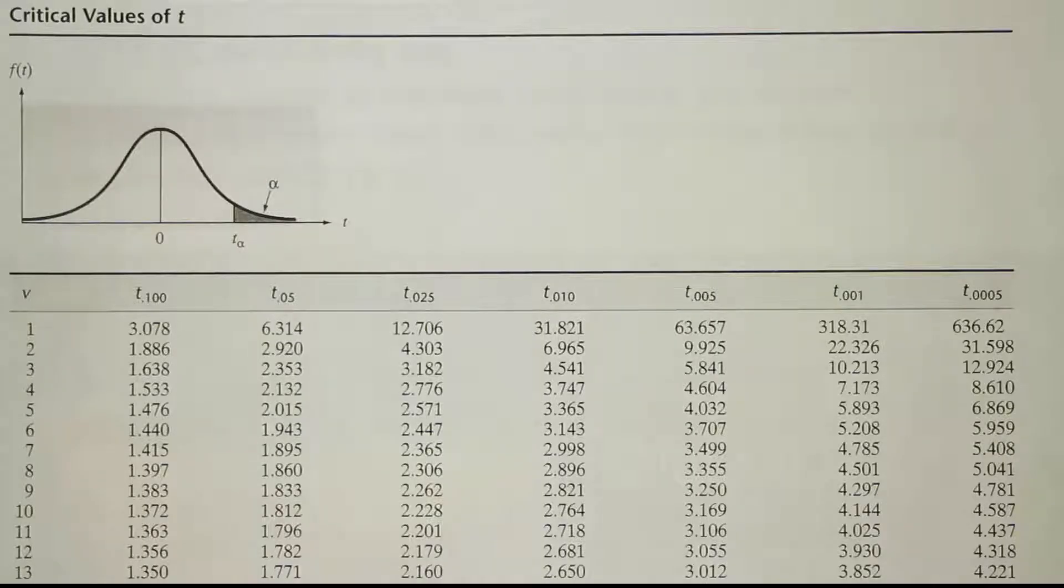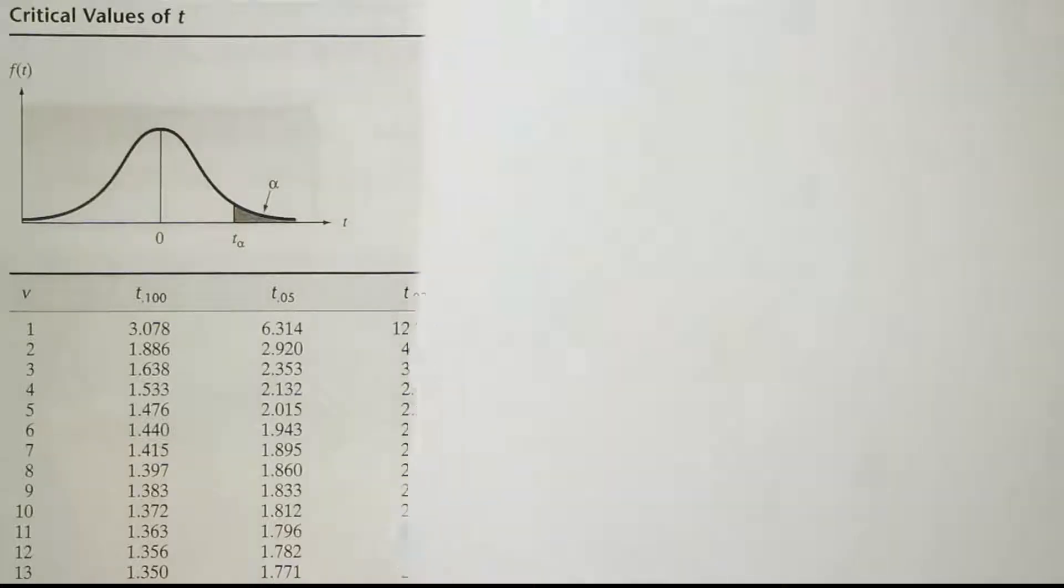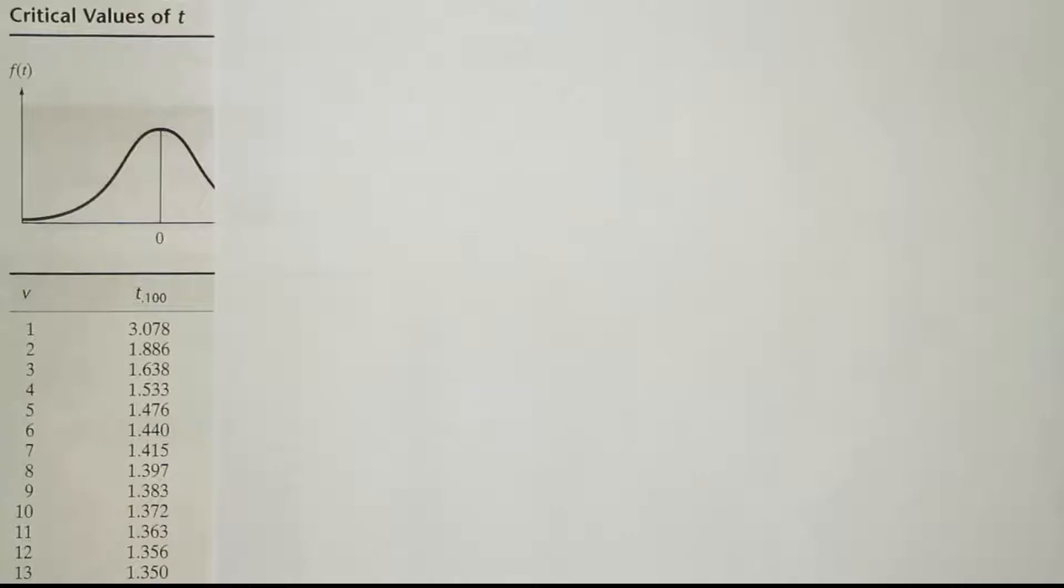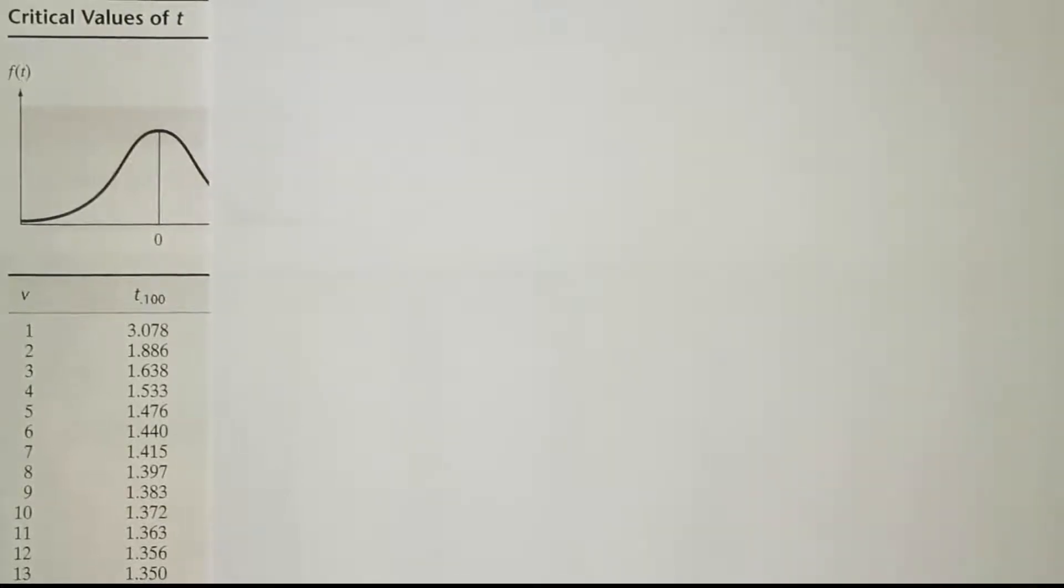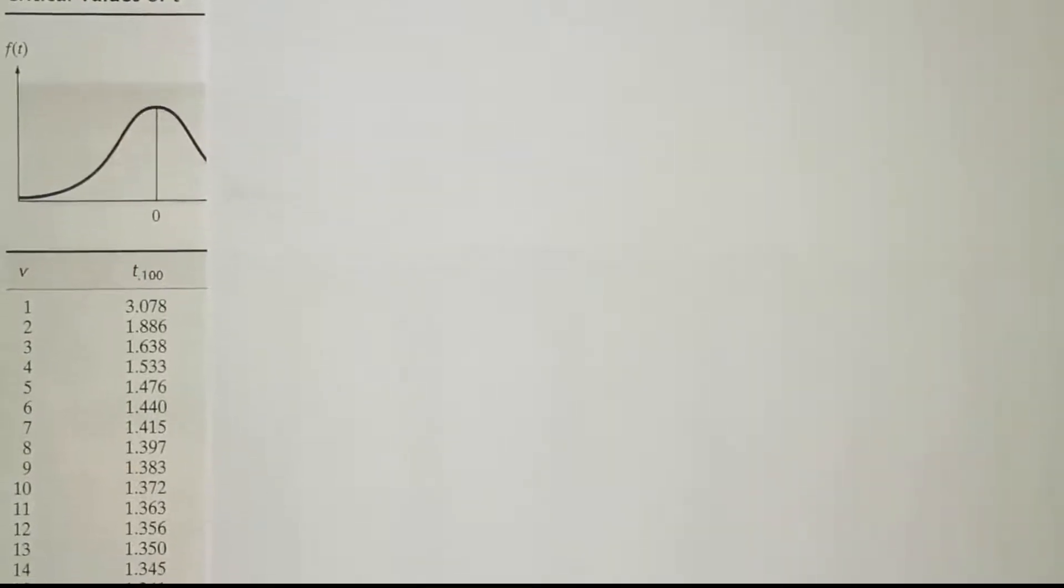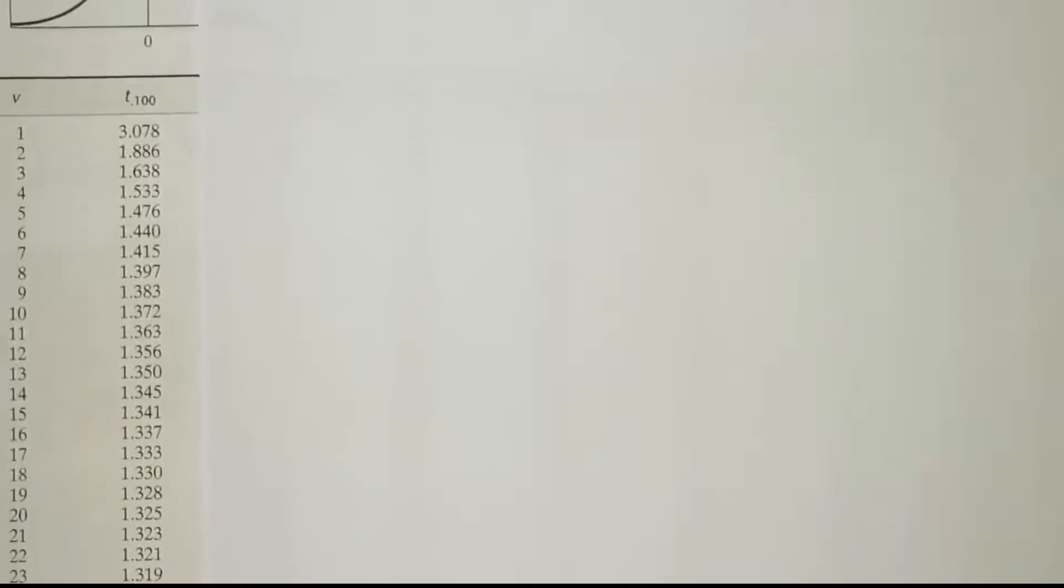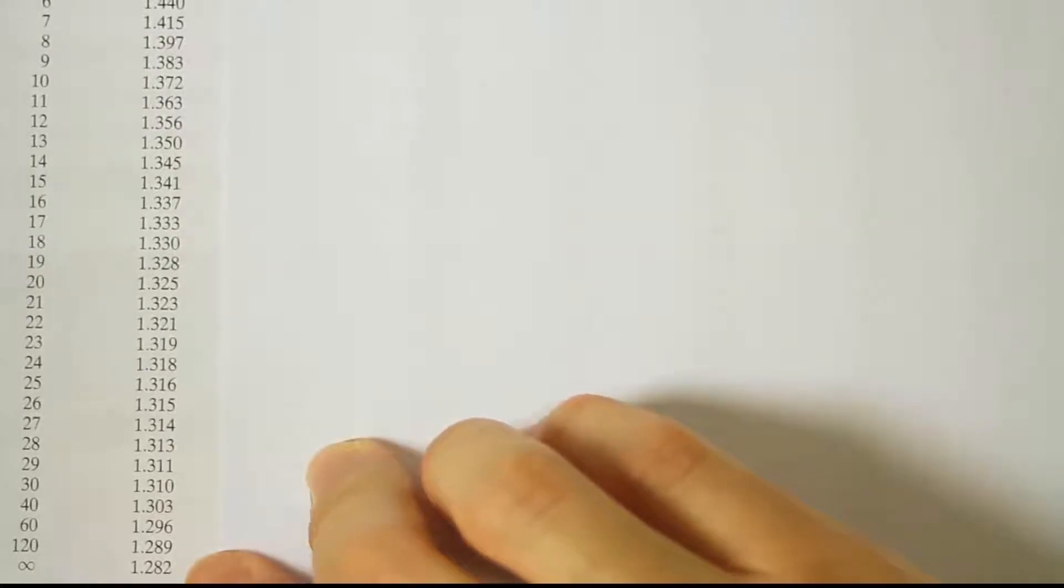Okay, so we're looking up 0.10, so we're looking at that column, the 0.10 column, and we're going all the way down until we see the last entry next to the symbol infinity. Okay, so we see that it's 1.282.